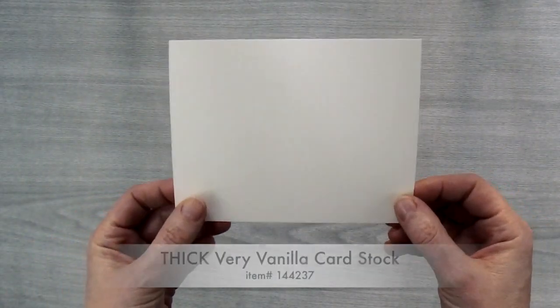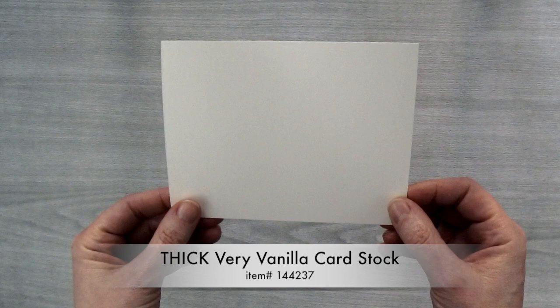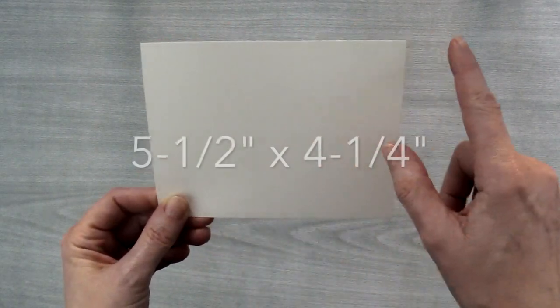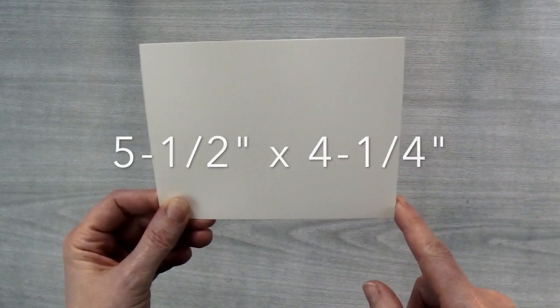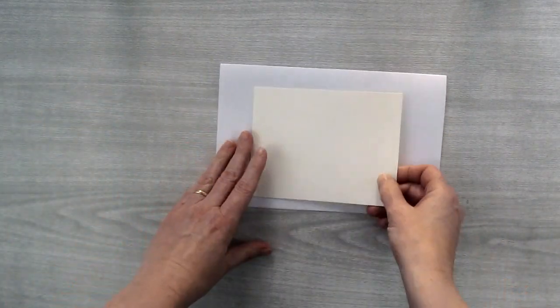To start off with you're going to need a piece of thick very vanilla cardstock and I've cut this piece to five and a half inches by four and a quarter inches. I'm also going to need a scrap piece of computer paper to protect my work surface. I'm going to be using four colors of ink.